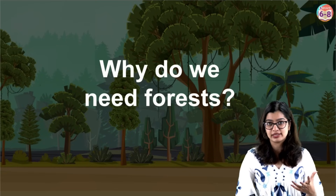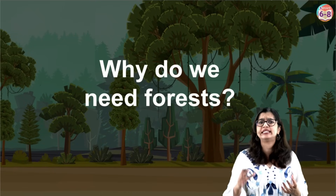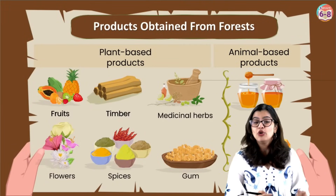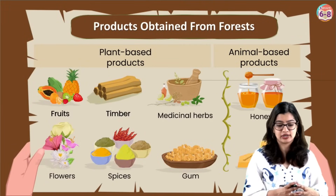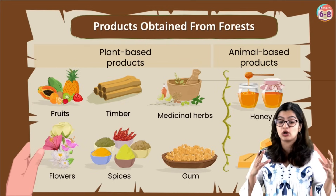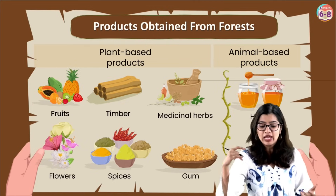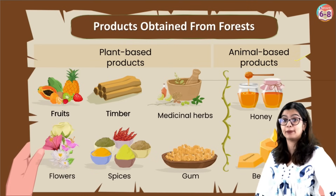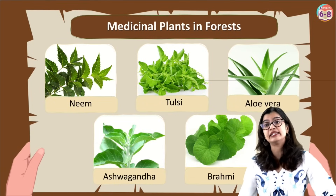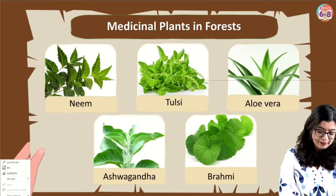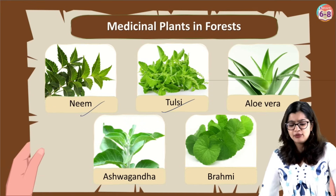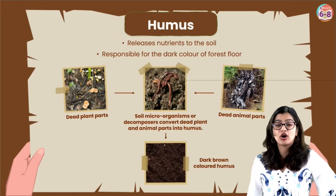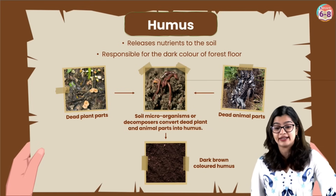Why do we need forests? We obtain various products from forests — both plant-based and animal-based. Plant-based products include fruit, flowers, timber, medicinal herbs, spices, and gum. Animal-based products mainly include honey and beeswax. Medicinal plants found in the forest include neem, tulsi, ashwagandha, and brahmi. Forests are also rich in organic matter called humus.